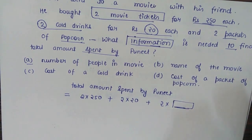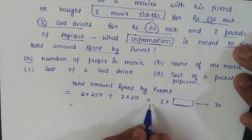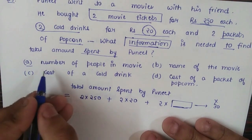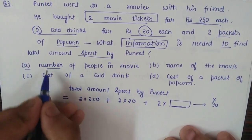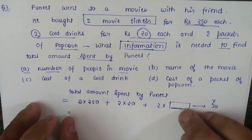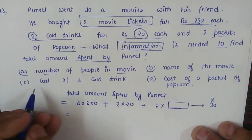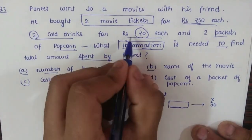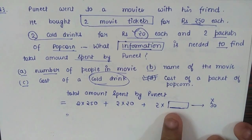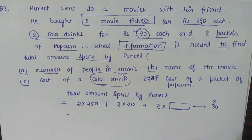For example, if popcorn cost 30 rupees each, we could calculate easily. Looking at the options: (A) number of people in the movie — irrelevant; (B) name of the movie — irrelevant; (C) cost of a cold drink — already given as 20 rupees; (D) cost of popcorn — this is the missing information. So the answer is option D.